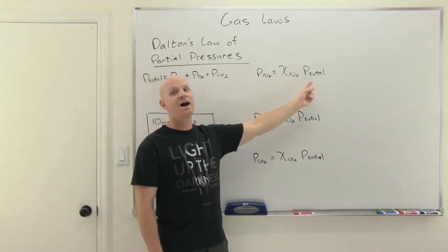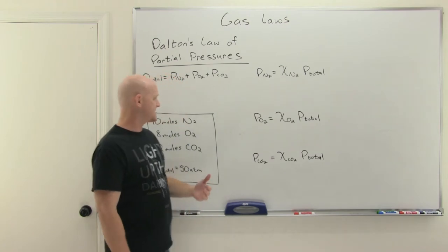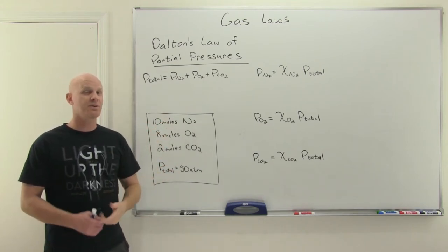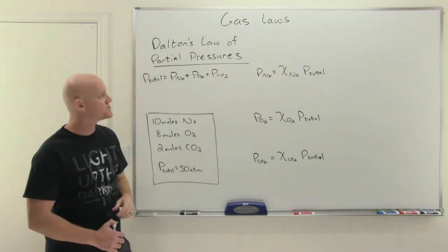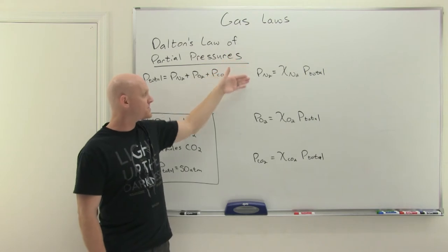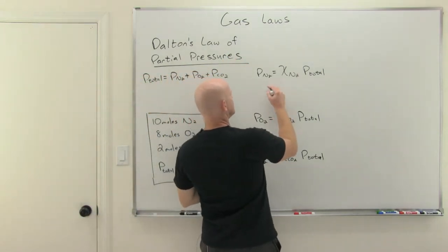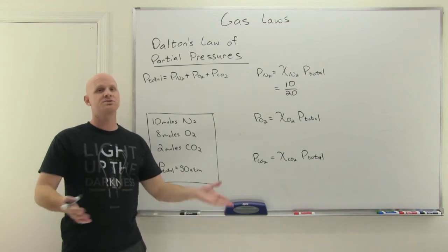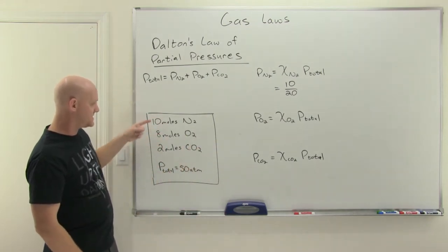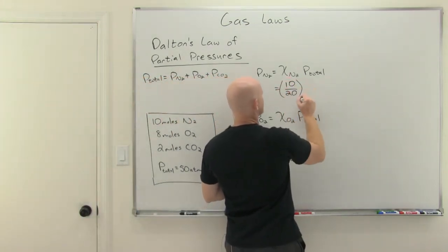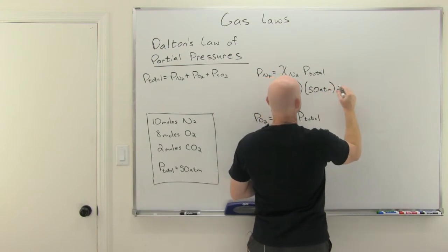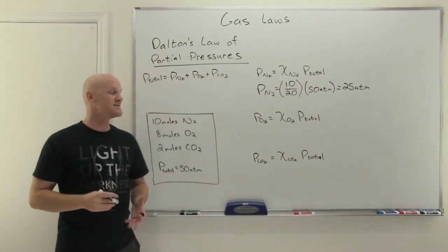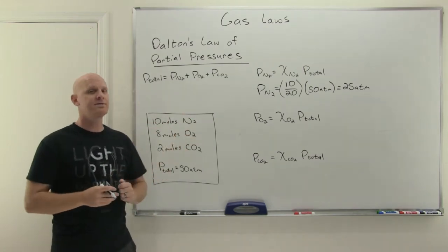The partial pressure equals the mole fraction of the gas times the total pressure. In this case, 10 out of a total of 20 moles are nitrogen. If nitrogen represents half the moles of gas, then it's also going to be responsible for half of the pressure. The partial pressure of nitrogen equals a mole fraction of 10 out of 20 — that's 10 plus 8 plus 2 — times the total pressure of 50 atmospheres, and nitrogen is responsible for a partial pressure of 25 atmospheres.